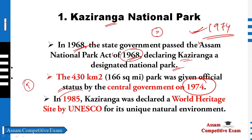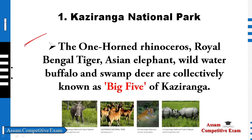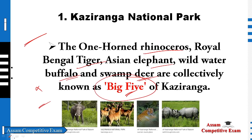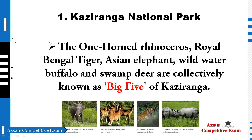In 1985, UNESCO declared Kaziranga a World Heritage Site. So the important dates: in 1974, the central government declared Kaziranga as a national park, and in 1985, UNESCO declared it a World Heritage Site. I will tell you that the World Heritage Site was declared in 1985.